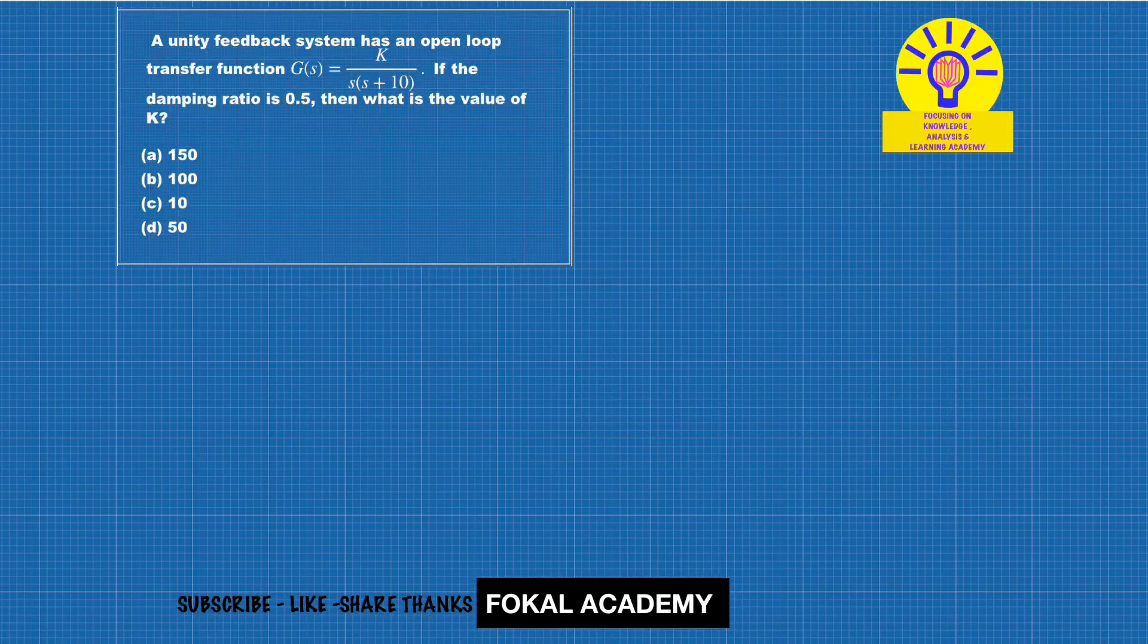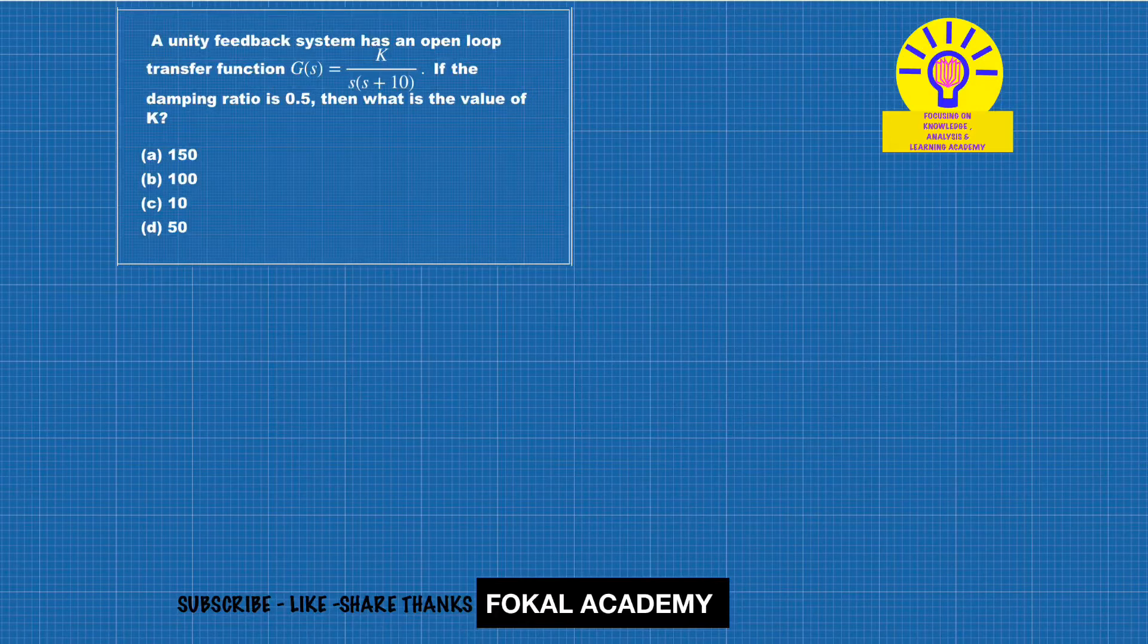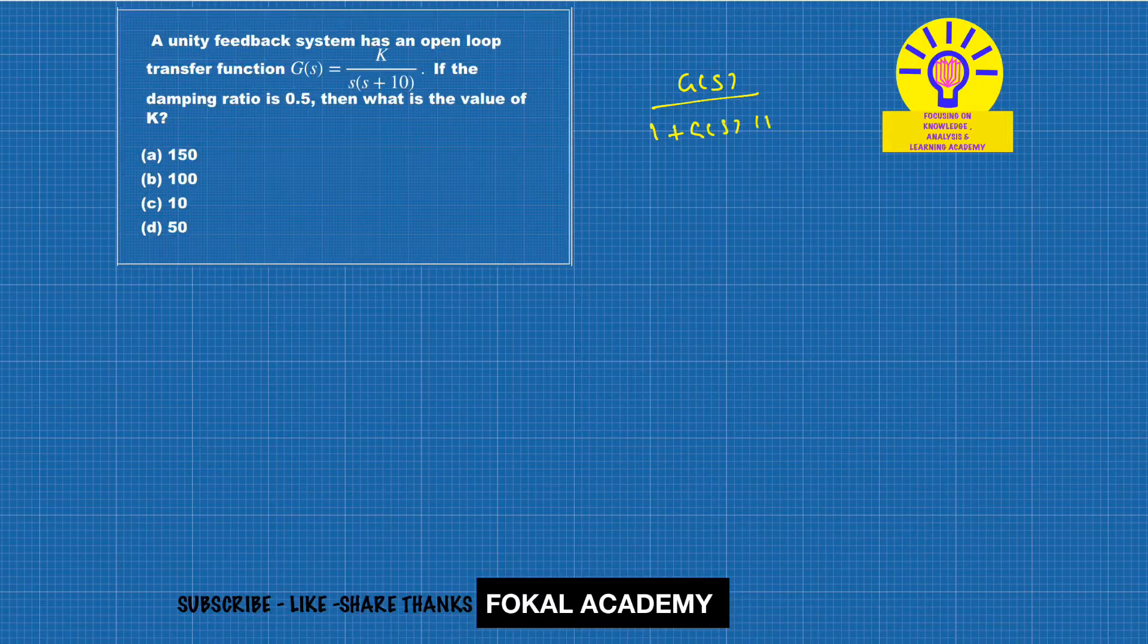First of all, construct the transfer function. We know that the transfer function T(s) = G(s)/(1+G(s)H(s)). Now substitute G(s) here, that is k/(s(s+10)) divided by 1 plus k/(s(s+10)).